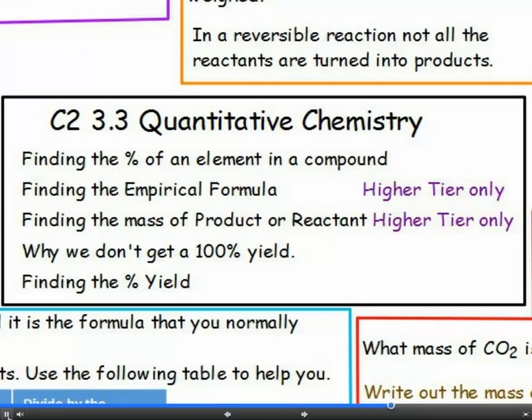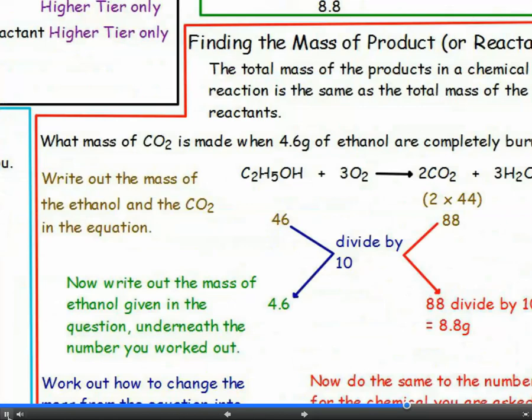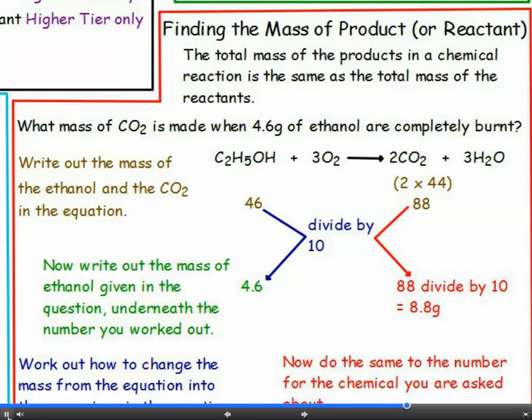Finding the mass of product or reactant. In a chemical reaction, no atoms are created or destroyed and this means that the total mass of the reactants and products will be the same. If you only know about one of the reactants, or are trying to find out about just one of the products, you need to do calculations like this, however.